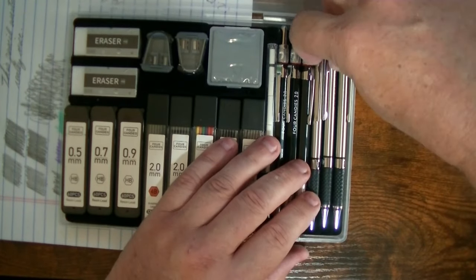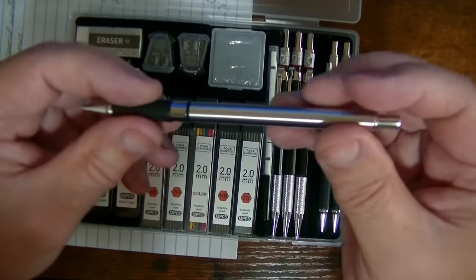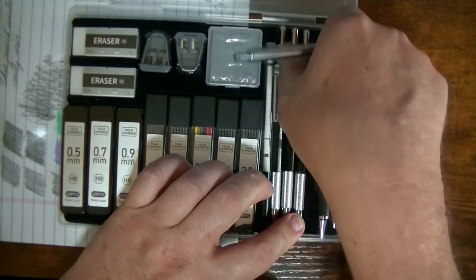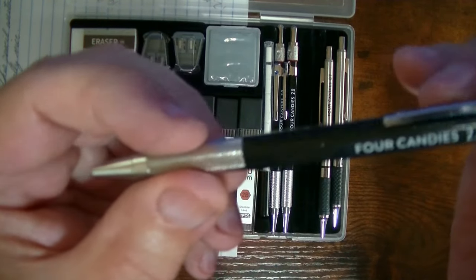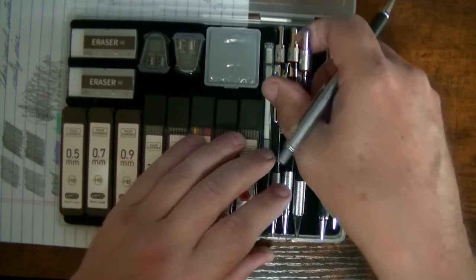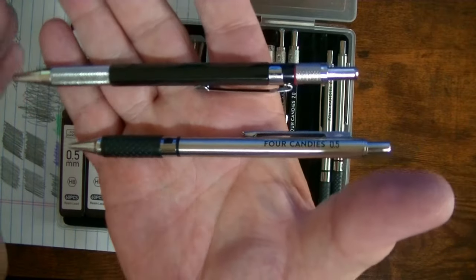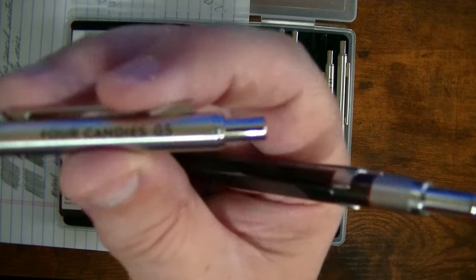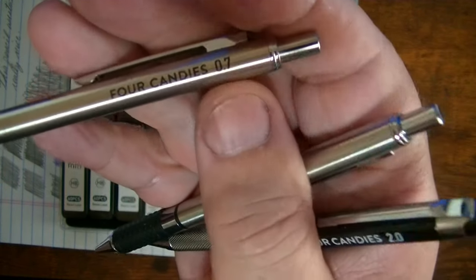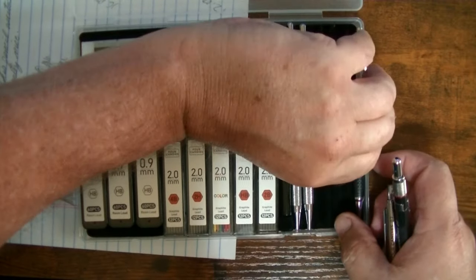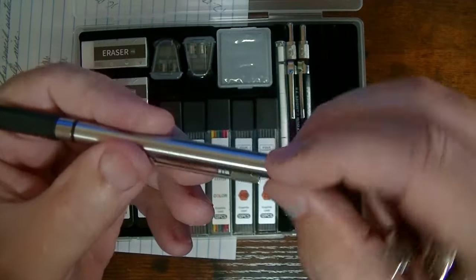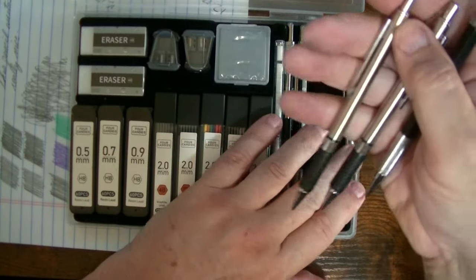I also want to show you that there are three other mechanical pencils here. It has a nice rubber grip down on the bottom. These have a kind of a braided metal bottom here, as you can see. So you can see the difference between the two pencils. Now this one here says 0.5, then you have this one that says 0.7, and then you have this one that says 0.9.